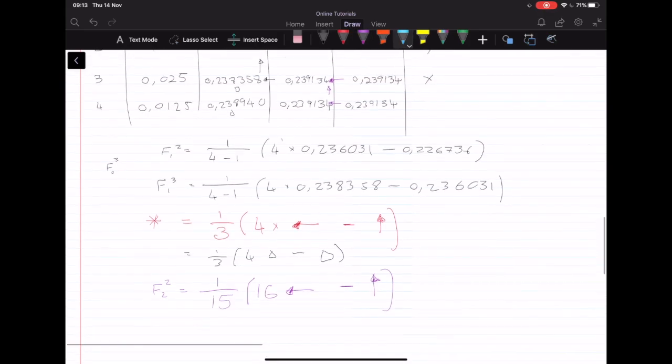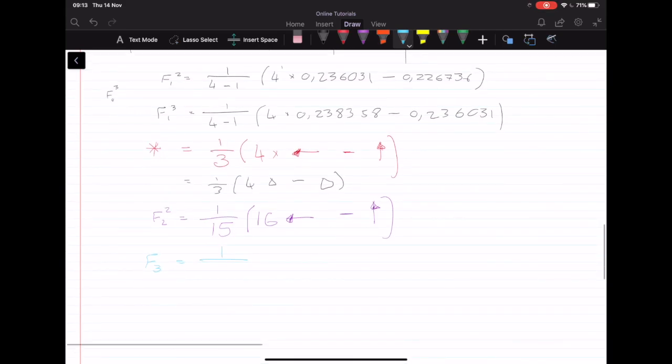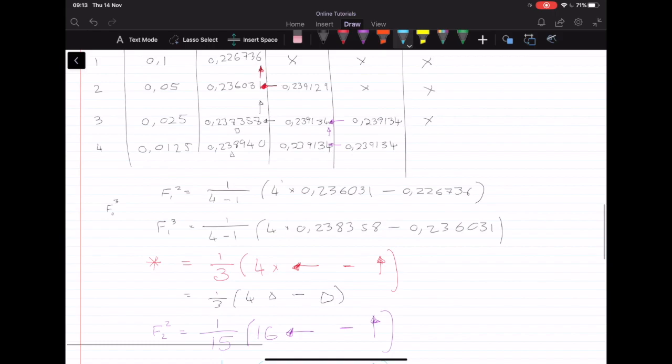And if you want to know, the last column has got a very similar pattern. F³ is 1 over 4³ minus 1, which is 63 times 64 times the number next to it, minus the number above it. So we times that number, minus that number, and what we get is our answer being 0.239134.